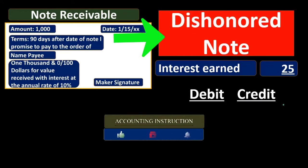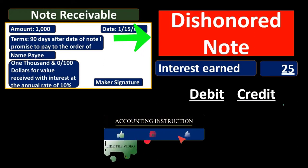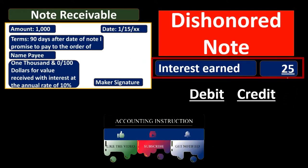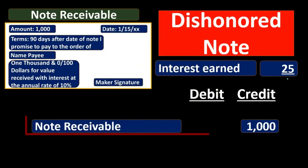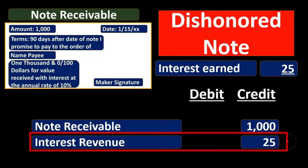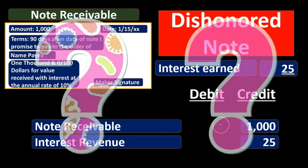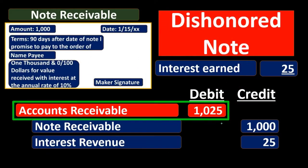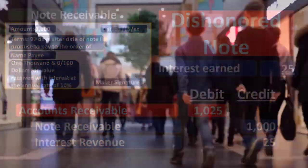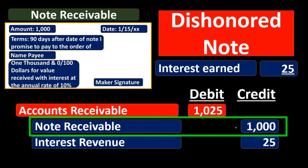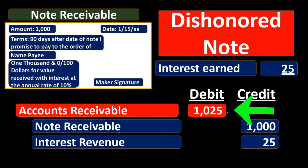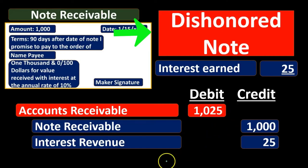If the note is dishonored — meaning they don't pay — we still earned the $25 interest and need to take the note off the books since it's past due. But since we can't debit cash, we put it back into accounts receivable so we can track in our subsidiary ledger that this customer still owes us money and go through the collection process. We still record interest revenue earned, remove the note from the books, and place the total amount into accounts receivable as a holding account.